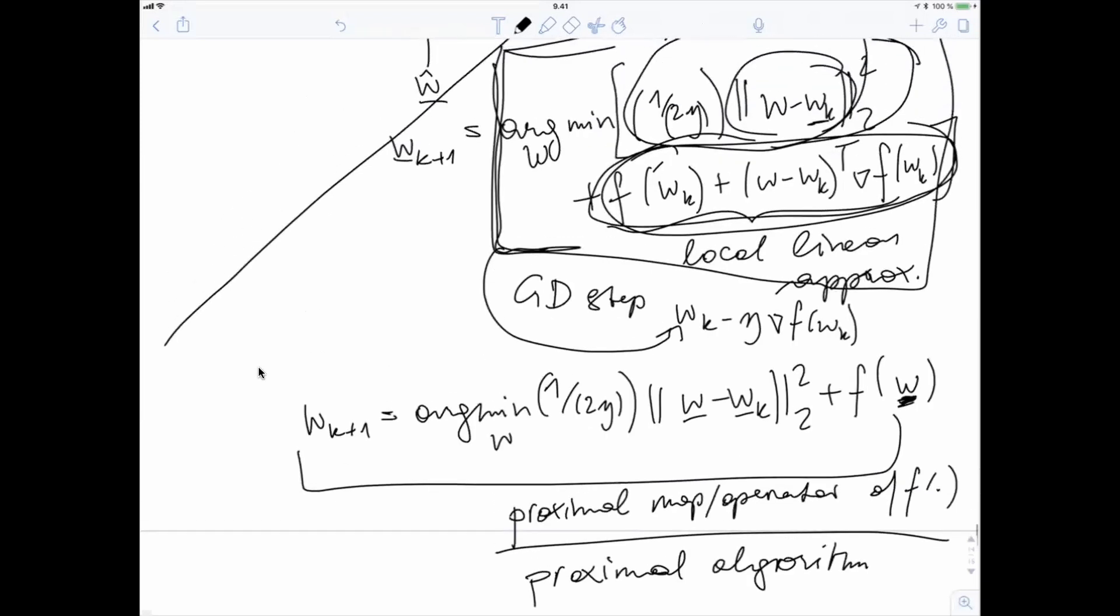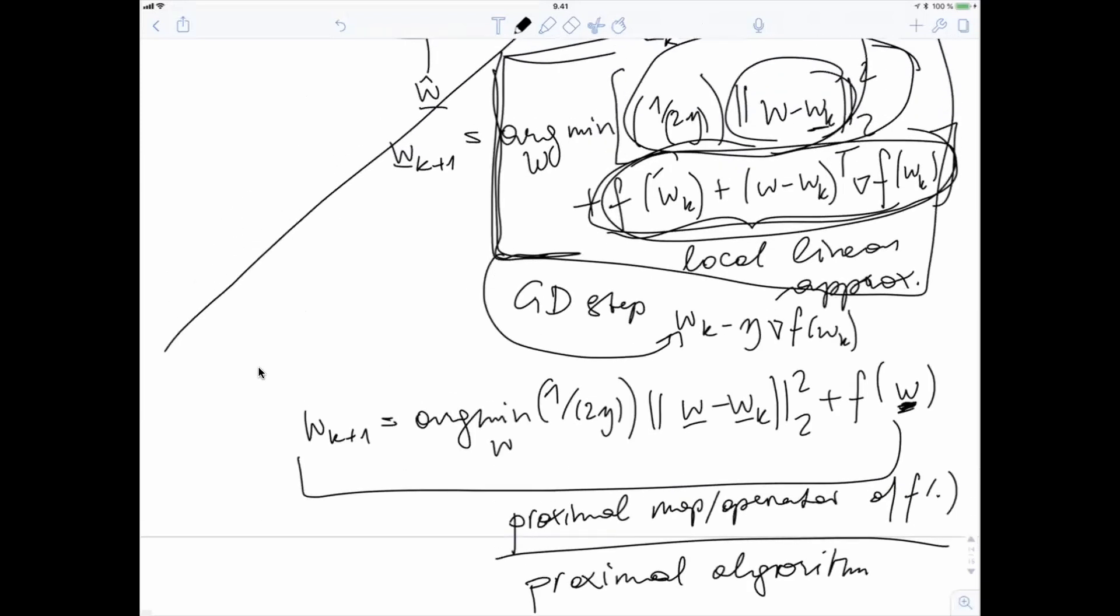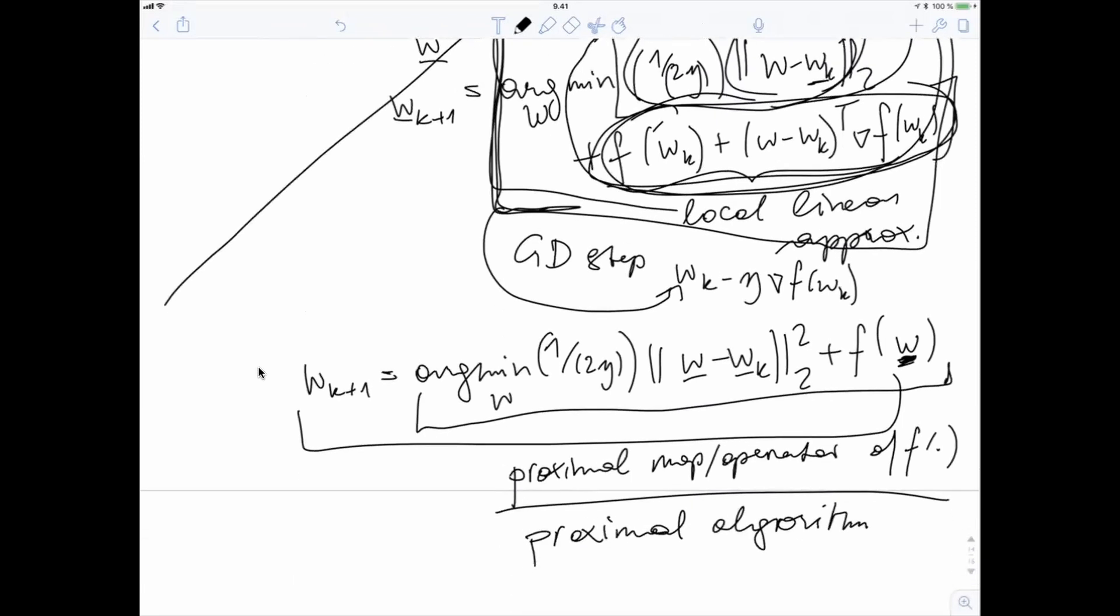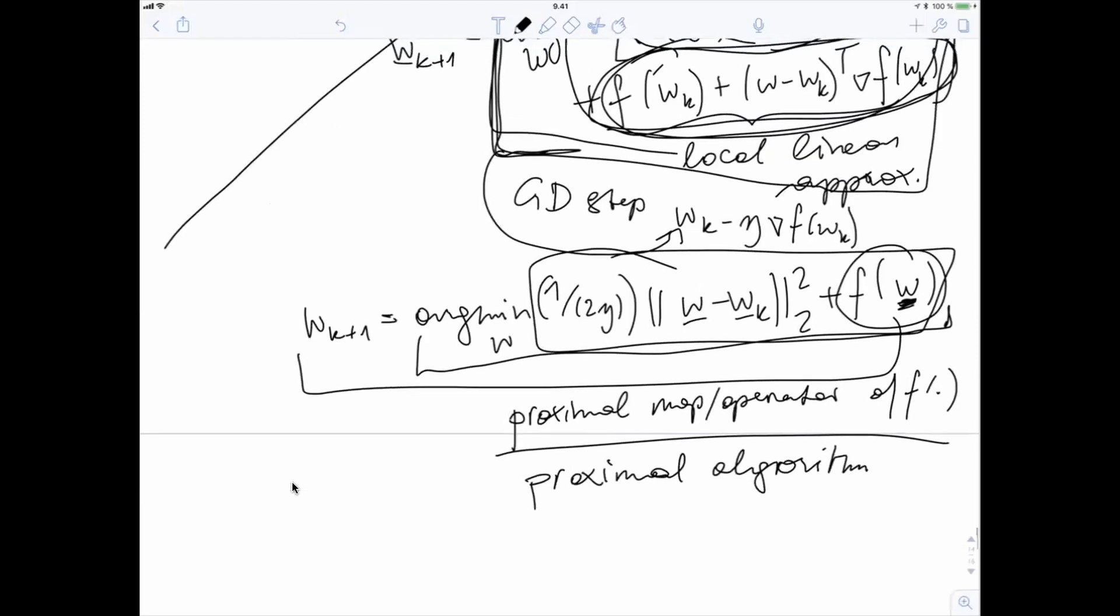However, the problem now here is we got a more complicated minimization problem. Here we had to, in gradient descent, we minimize essentially a convex quadratic function. This here is a convex quadratic function that we want to minimize. So it's somewhat easier than this here. This could be an arbitrary function because this f of w could be arbitrary. Of course, if f of w is also a convex quadratic function, then we are still minimizing the convex quadratic function. But in general, this might be more complicated to minimize.